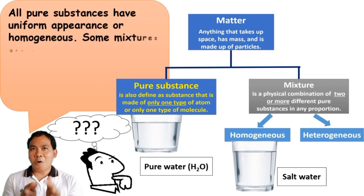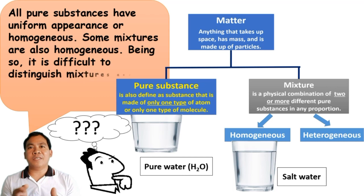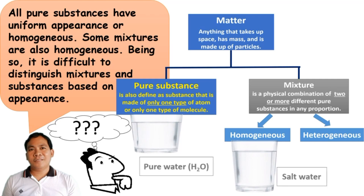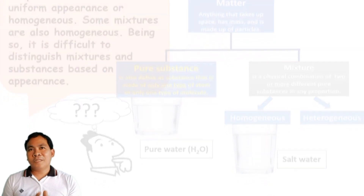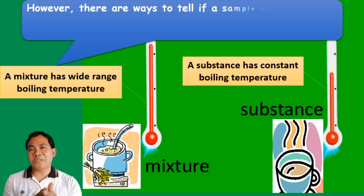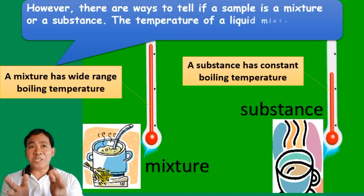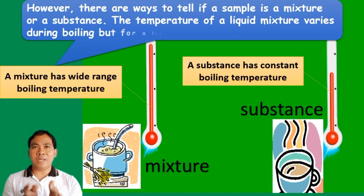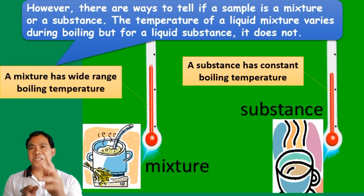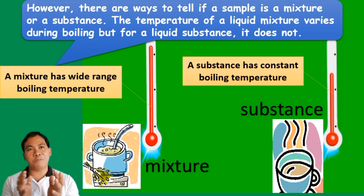There are mixtures that are homogeneous which may be mistaken as pure substances. All pure substances have uniform appearance. Some mixtures are also homogeneous, making it difficult to distinguish mixtures and substances based on appearance alone. However, there are ways to tell them apart: the temperature of a liquid mixture varies during boiling, but for a pure substance it does not. The mixture has a wide range of boiling temperature, while a pure substance has a constant boiling temperature.